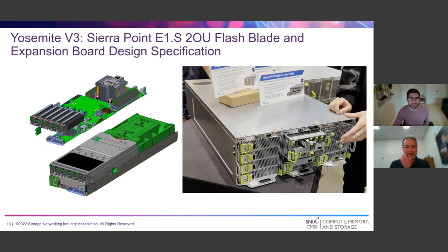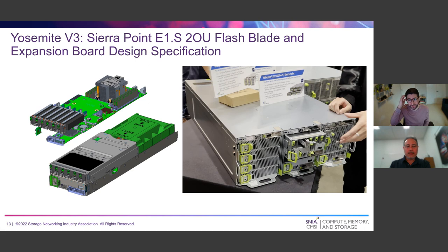This is Yosemite V3 with the Sierra Point E1.S 2U Flash Blade and Expansion Board. These are all found if you go to the OCP Open Compute contributions under server specifications. The really interesting thing about Yosemite V3 is you can put 1U blades in, or 2U height, and fit 3 across. This is a 4U Open Rack that fits into Open Rack v2. Meta can basically swap out these different modules and mix and match different amounts of compute, storage, and networking for different types of applications. The spec talks about support for Type 3, Type 8, Type 15, and Type 17 — different database and application types for their various services — making this really modular.